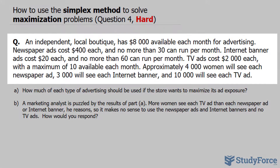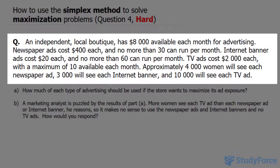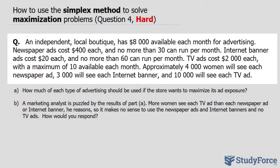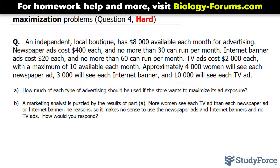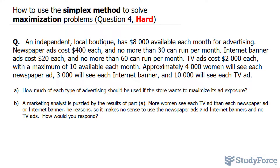This is question 4. An independent local boutique has $8,000 available each month for advertising. Newspaper ads cost $400 each and no more than 30 can run per month. Internet banner ads cost $20 each and no more than 60 can run per month. TV ads cost $2,000 each with a maximum of 10 available each month. Approximately 4,000 women will see each newspaper ad, 3,000 will see each internet banner, and 10,000 will see each TV ad. We're expected to find how much of each type of advertising should be used if the store wants to maximize its ad exposure.